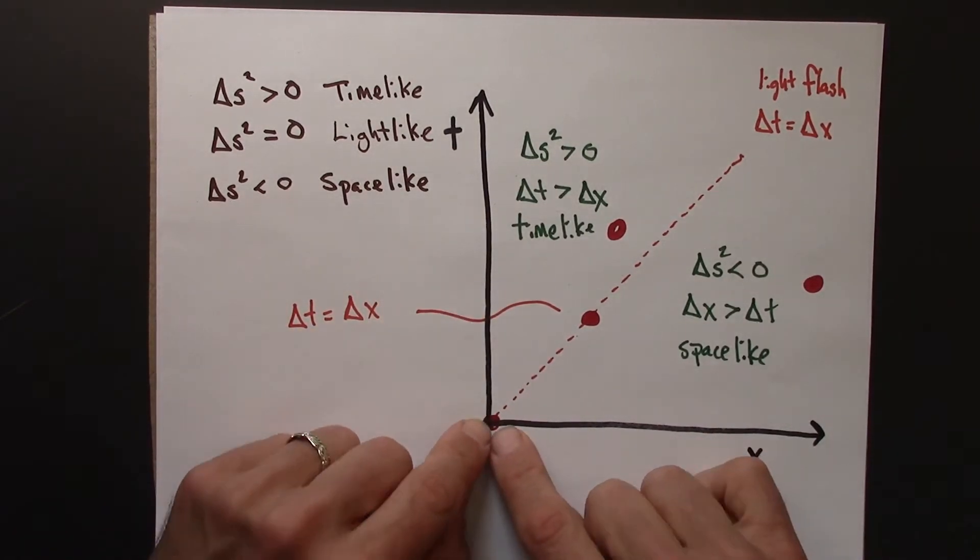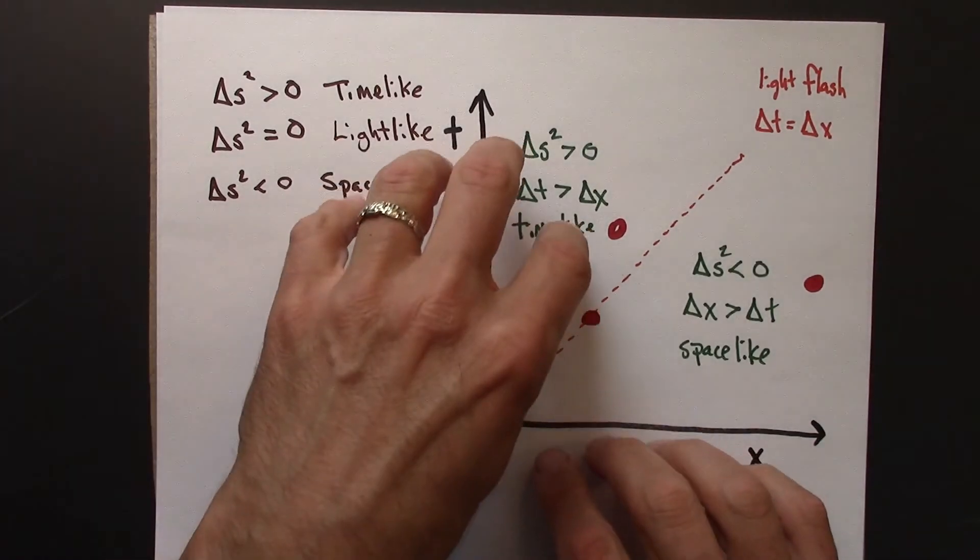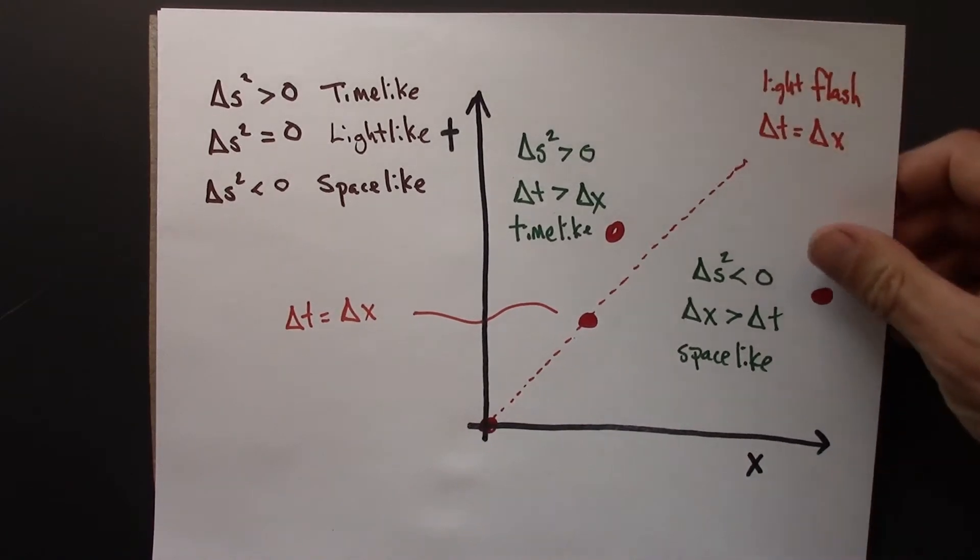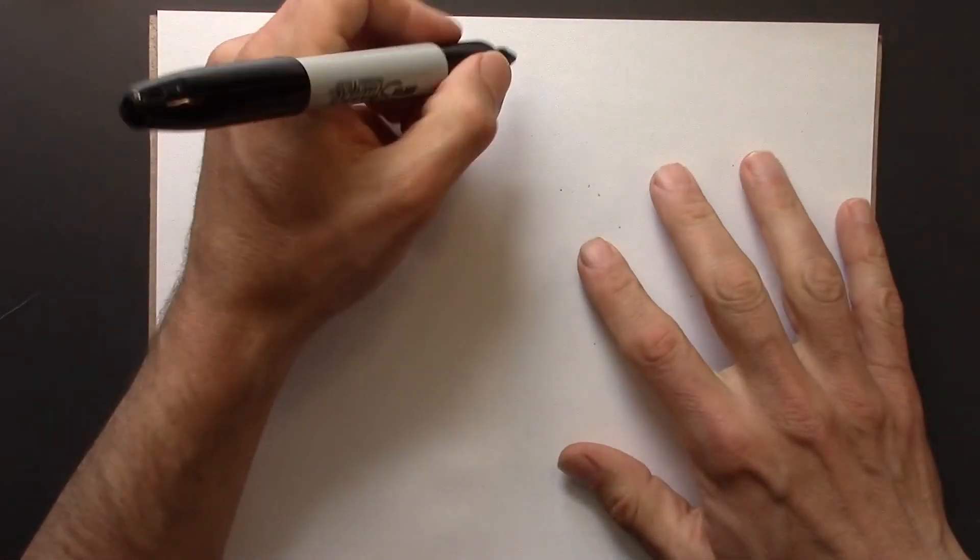So with respect to this event at the origin, this lets us divide space up into different regions. So let me draw a picture for that and introduce, at least what I think is some fun terminology.